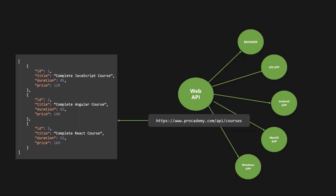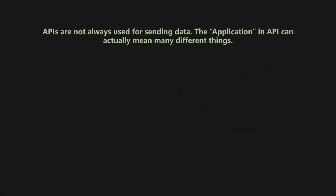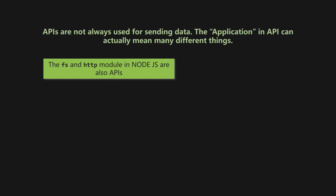Keep in mind that web APIs are the most common type of APIs, but APIs are not only used to send data and are not always related to web development. APIs can mean many different things. For example, the Node.js file system or HTTP module — we can say these are small pieces of software which we interact with by using their API. When we use the readFile method of the FS module, we are using the FS API. That is why you will sometimes hear Node.js core modules referred to as Node APIs.